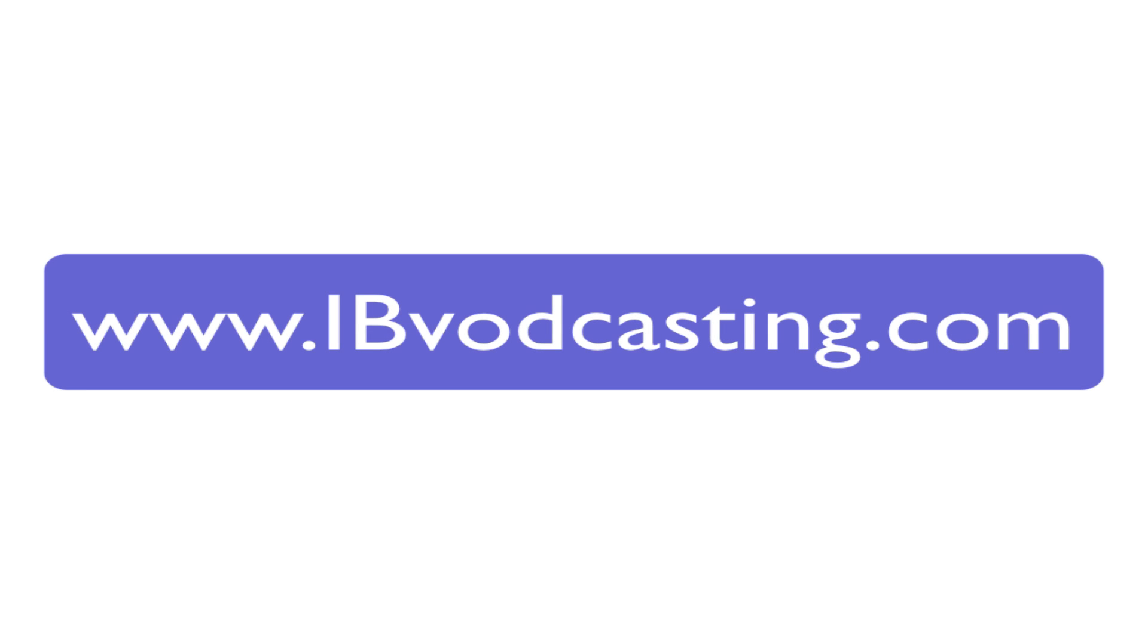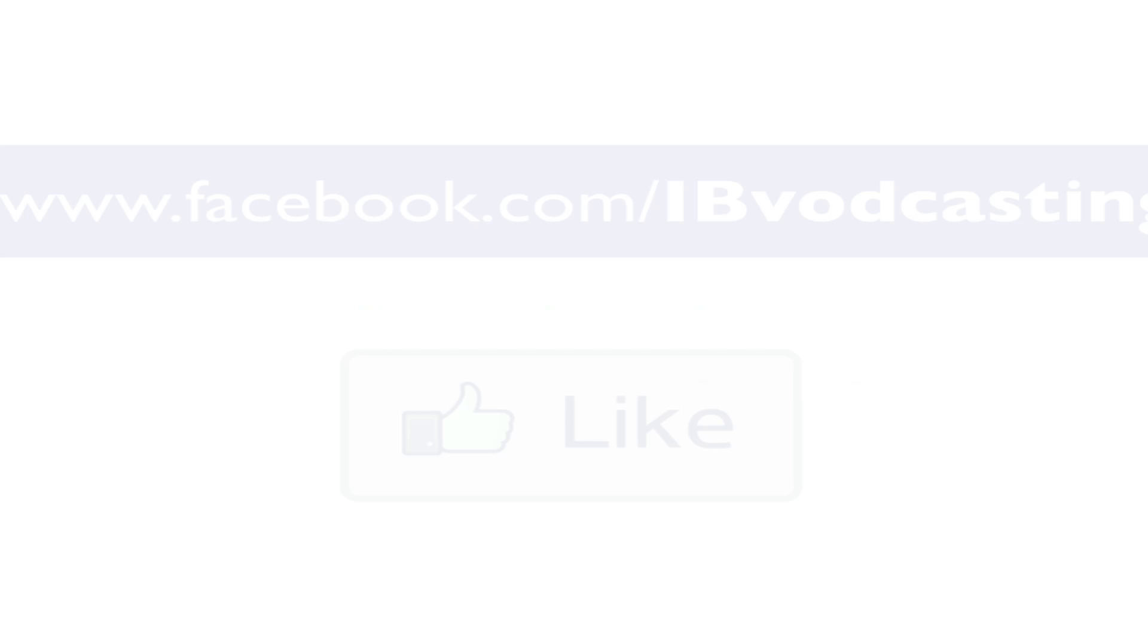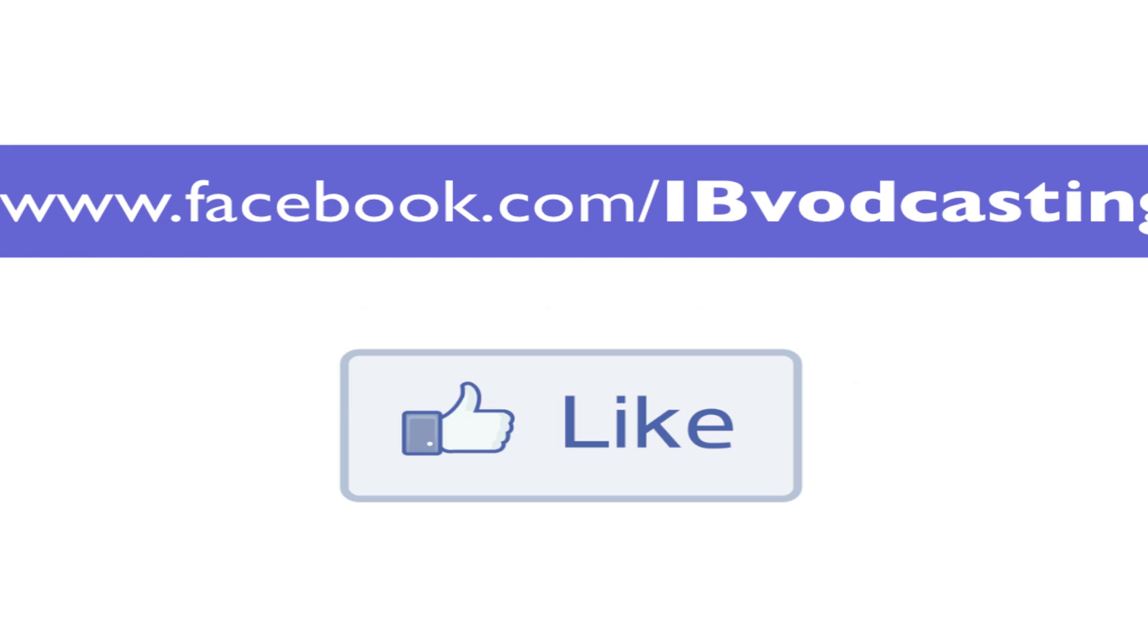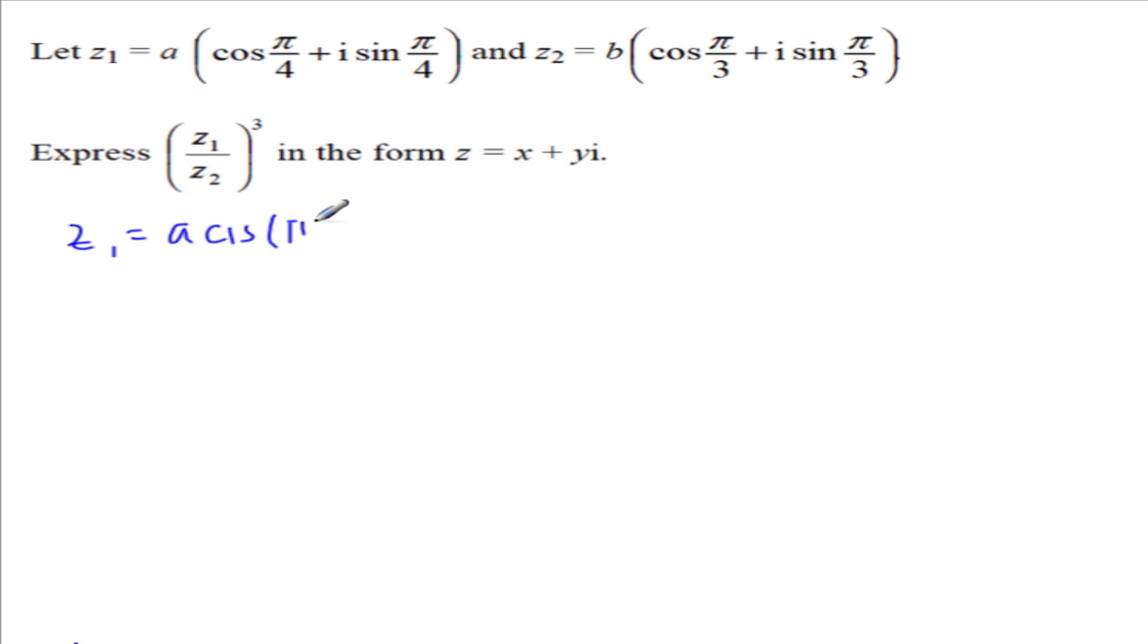Here's a complex numbers question. We have Z1 is equal to A cis of pi over 4, and Z2 is equal to B cis pi over 3.